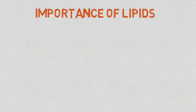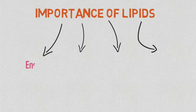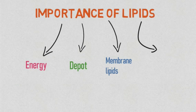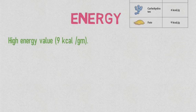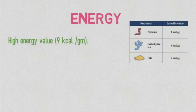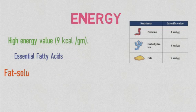To understand the importance of lipids, let's put them in four groups: energy, depot, membrane lipids, and signaling. Starting with energy, lipids give the highest energy value which is 9 kilocalories per gram in comparison with proteins and carbohydrates which give only 4 kilocalories per gram. Essential fatty acids must be taken in diet. Also, fat-soluble vitamins such as vitamin A, D, E, and K must be solubilized in fat before they are absorbed.